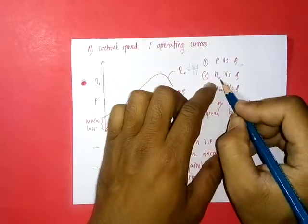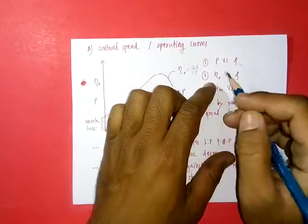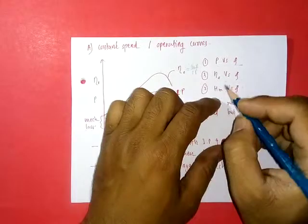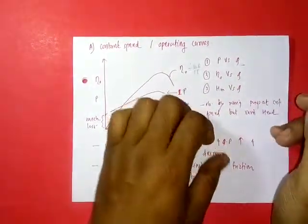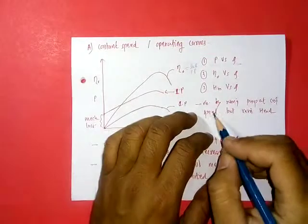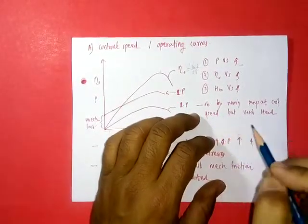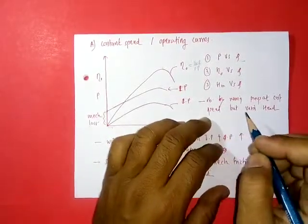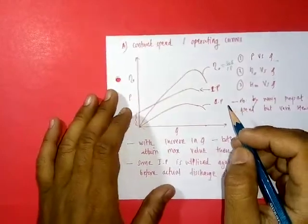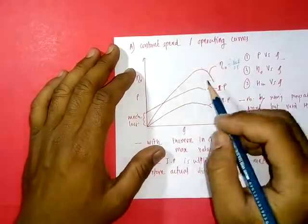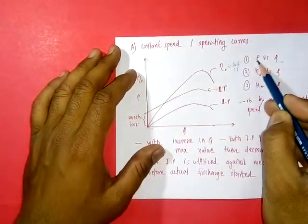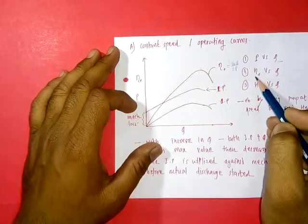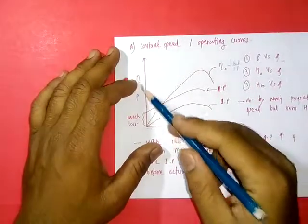These curves are obtained by running the pump at constant speed and varying the discharge. The variations of power — that is input power and output power — and variations of overall efficiency versus discharge are shown here.